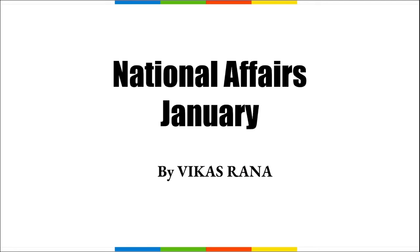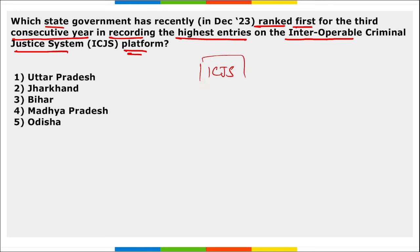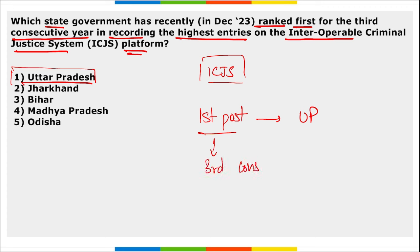In this video we will be discussing important current affairs for National Affairs for the January month. First question: which state government has recently ranked first for the third consecutive year in recording the highest entries on the Interoperable Criminal Justice System platform, that is the ICJS platform? The answer is Uttar Pradesh. UP secured the first position for the third consecutive year, with 1 crore 56,22,514 entries. Madhya Pradesh was second and Bihar was third.